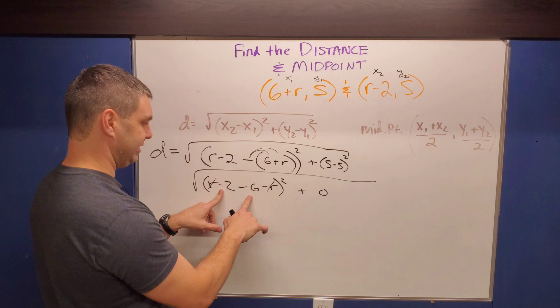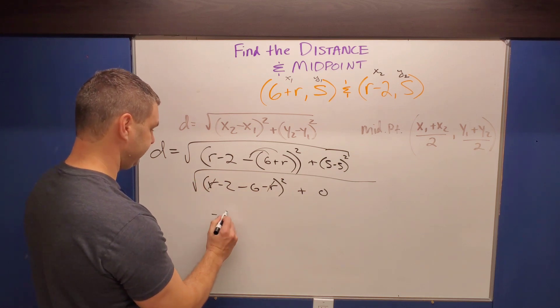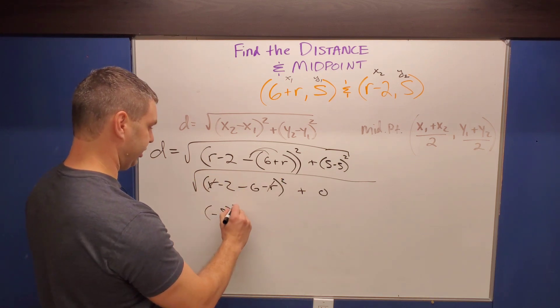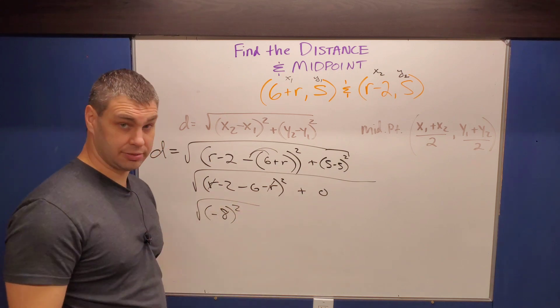So really I went from having R's and S's to now having no variables left. And instead, all I have is negative two minus six, which is negative eight. So negative eight still inside our parentheses squared inside the square root.